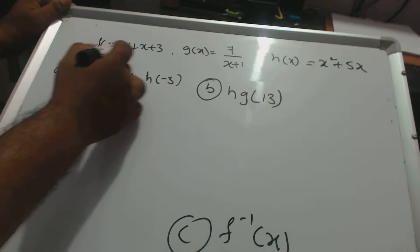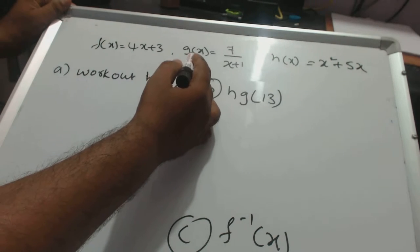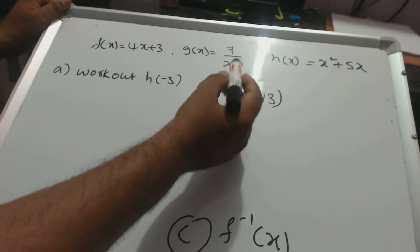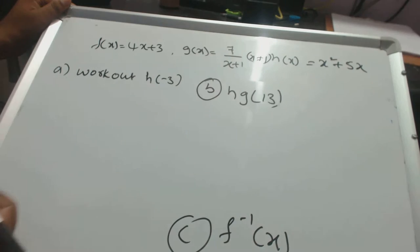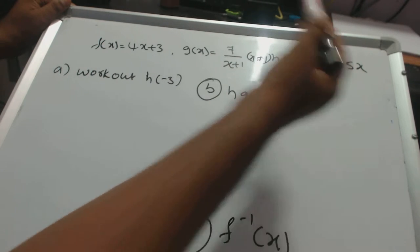Then we will see f of x is equal to 4x plus 3, g of x is equal to 7 by x plus 1, so that x should not be negative 1, and h of x is equal to x squared plus 5x.